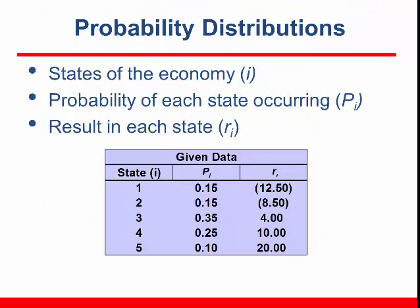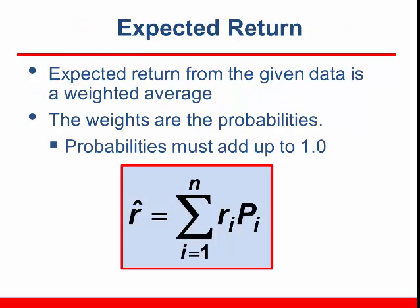A probability distribution describes a number of states, the probability of each state occurring, and the expected outcome in each state. For our example, I'm using a probability distribution that describes five states of the economy and the expected return on an investment in each state.